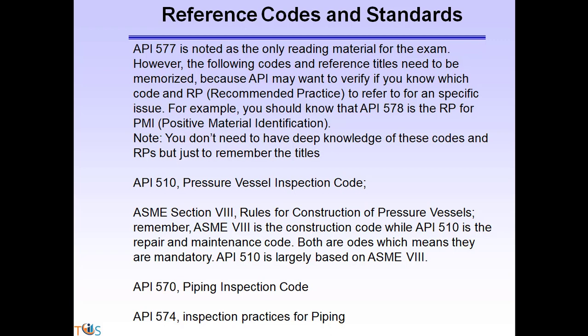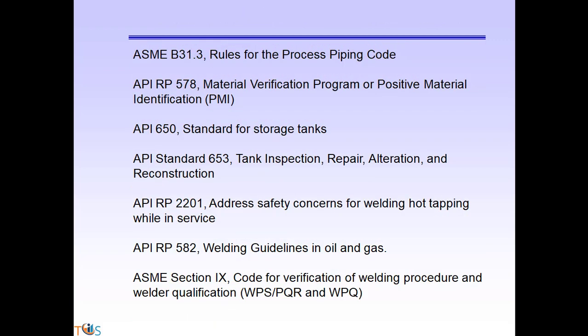Key codes include: API 510 Pressure Vessel Inspection Code; ASME Section 8, Rules for Construction of Pressure Vessels — note that ASME Section 8 is the construction code while API 510 is the repair and maintenance code, and both are mandatory; API 570 Piping Inspection Code; API 574 Inspection Practice for Piping; and ASME B31.3 Rules for Process Piping.